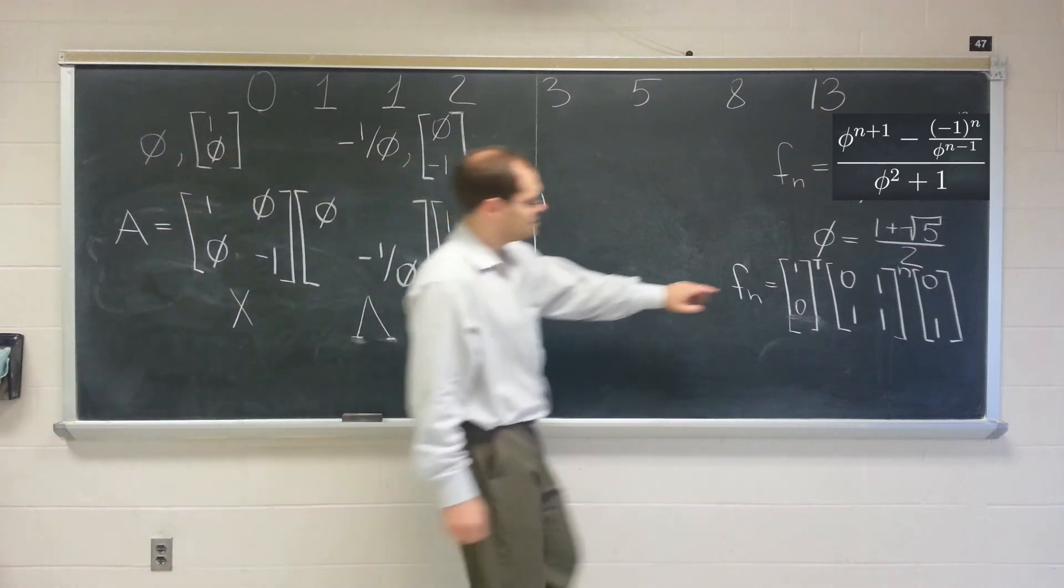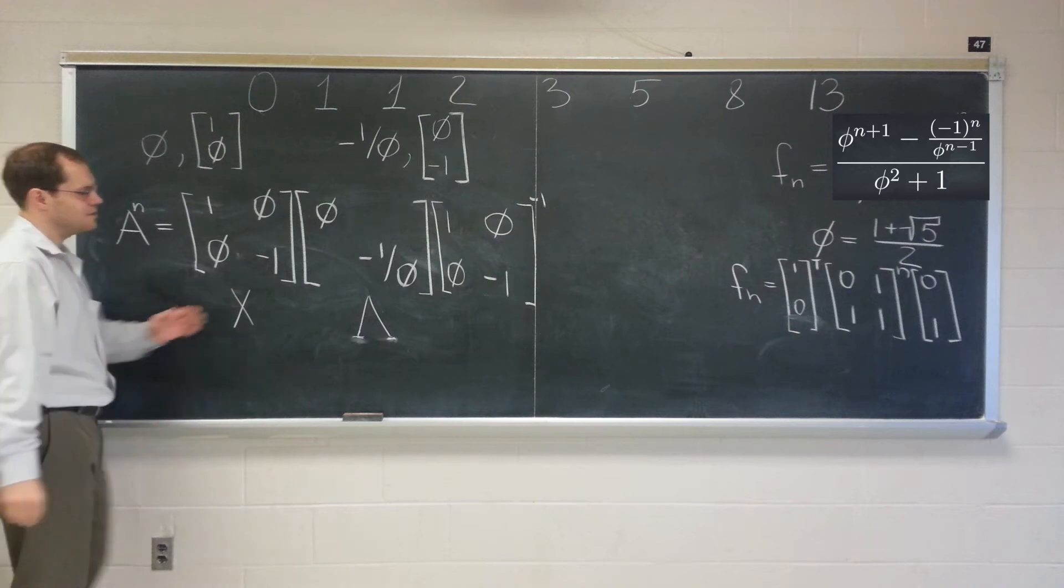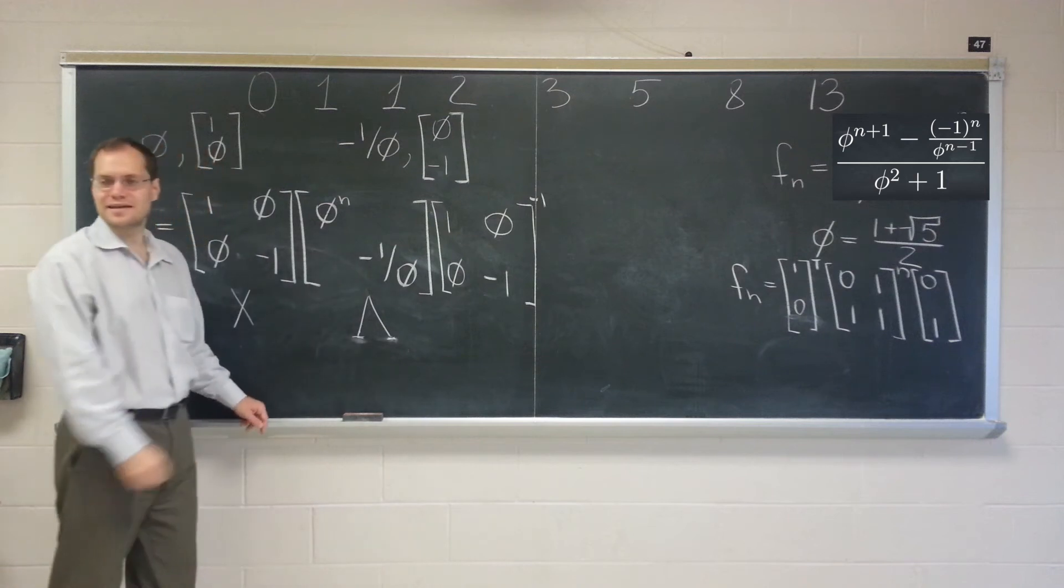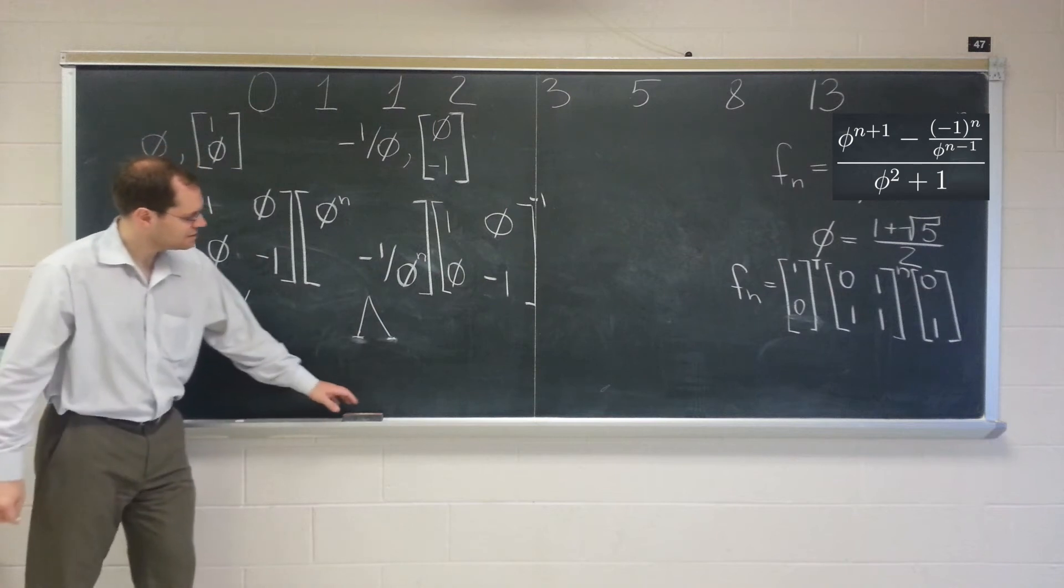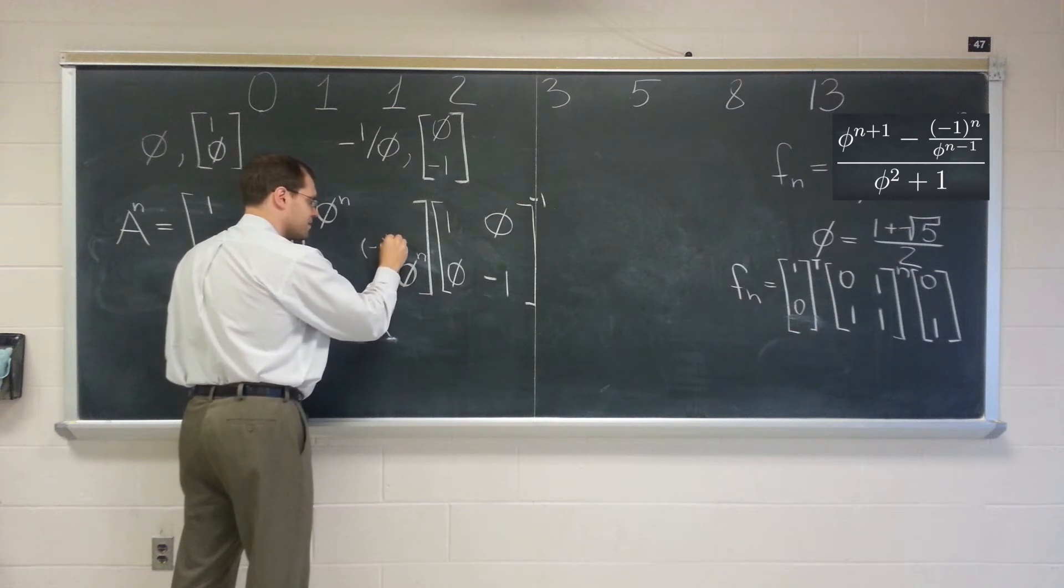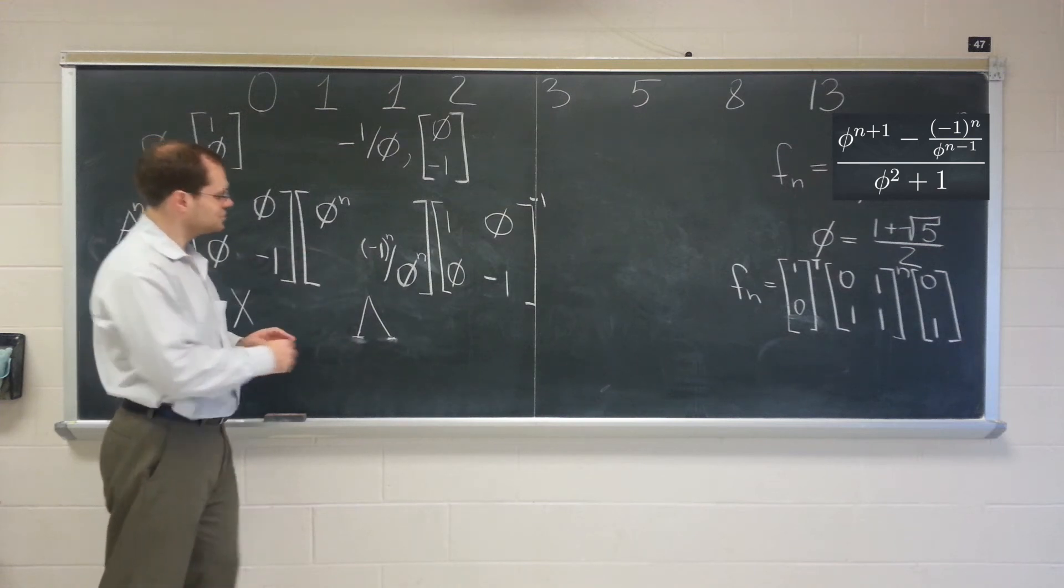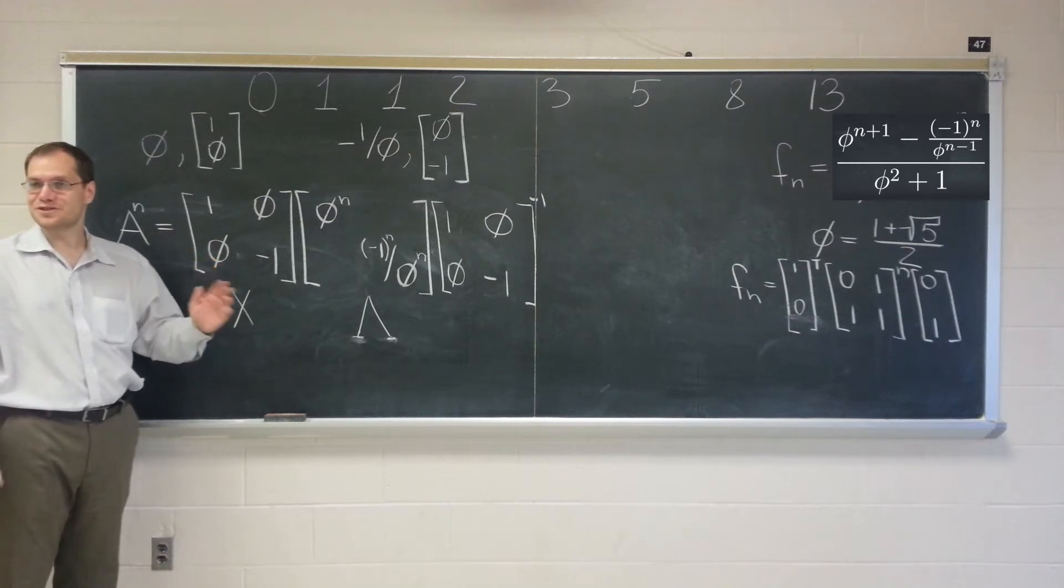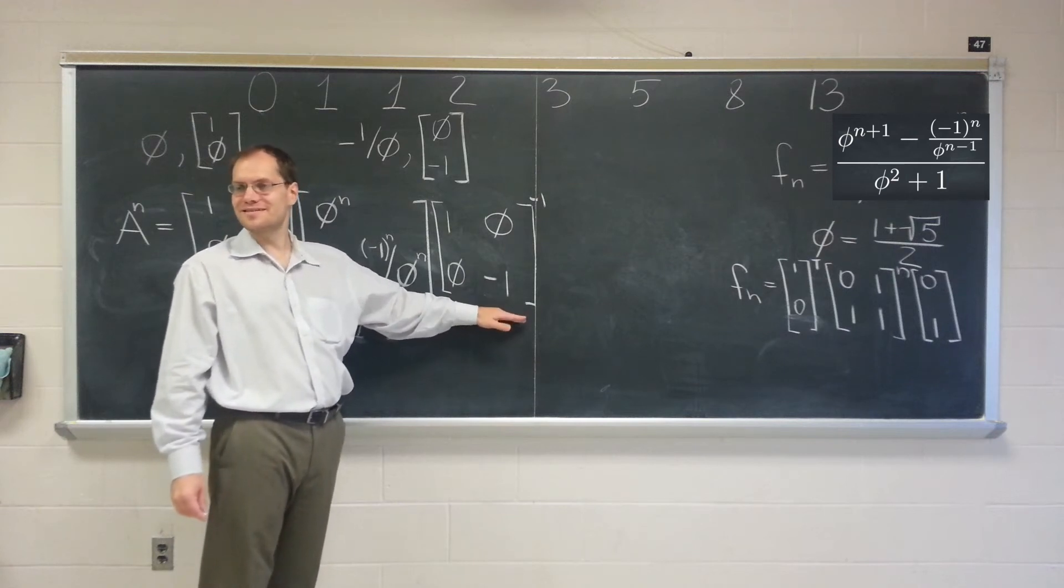Now our task is to raise this matrix to the nth power, which is very simple. Raising this matrix to the nth power means raising the middle matrix to the nth power, which, of course, means raising each diagonal entry to the nth power. So you have to be careful. What I just did doesn't quite do it, because you also have to raise the negative 1 to the nth power. And I'm very much on top of this, because when I was doing my preparation, I missed that. Great. So now we have to do the least pleasant task, which is to invert this matrix.